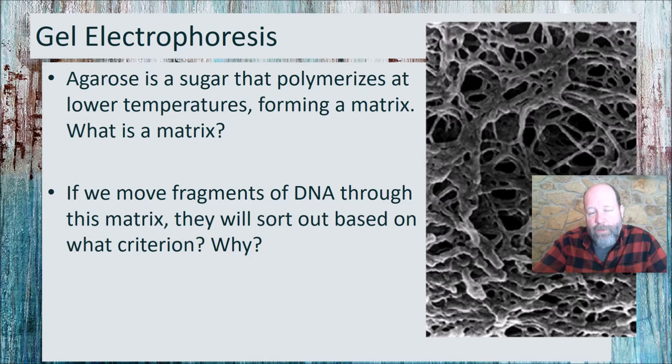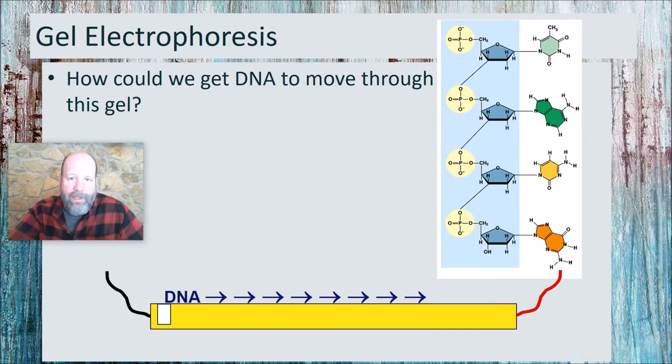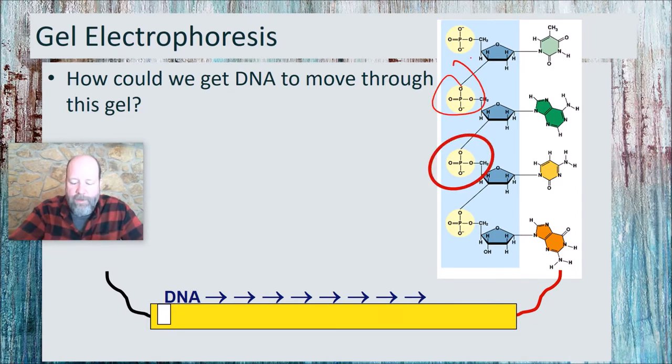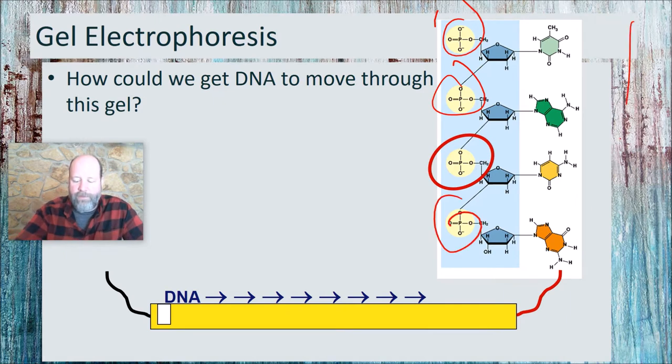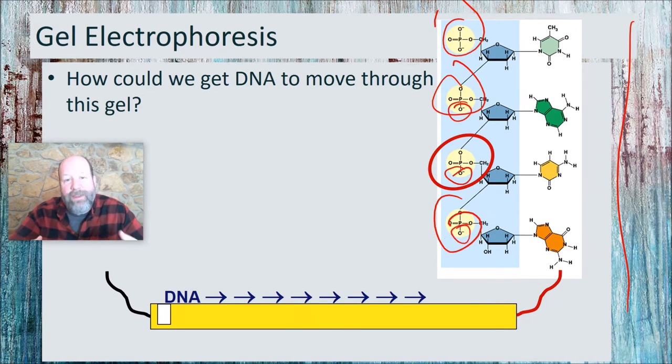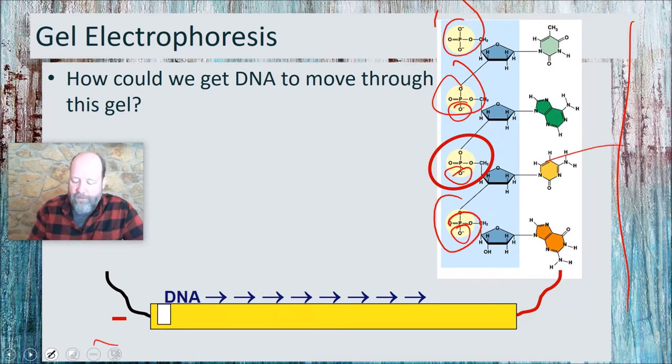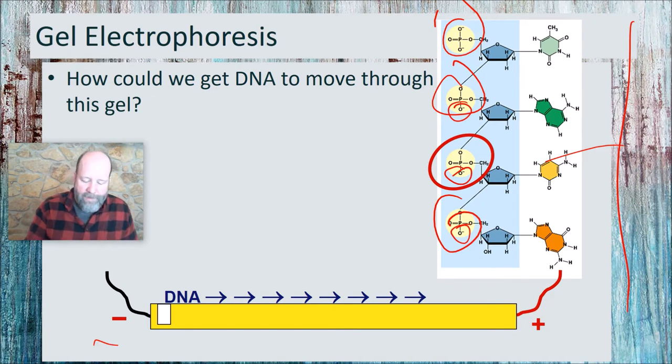So all we need to do now that we have this matrix is try and push DNA through it. We want to move DNA. If you look at the structure of DNA, you'll remember they have these phosphates all the way up and down both sides. The phosphates all have a little negatively charged oxygen right there. So the entire molecule of DNA is negatively charged. The way we're going to make this move is to put it in an electric field. We put a negative charge at one end, we put a positive charge at the other end, making this electric field.